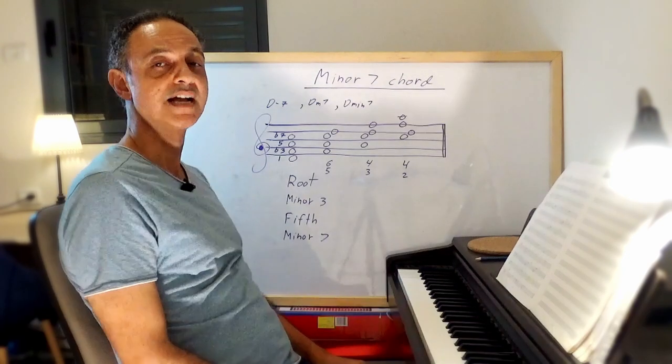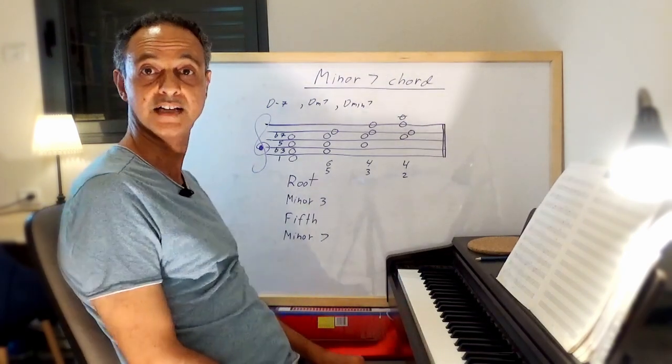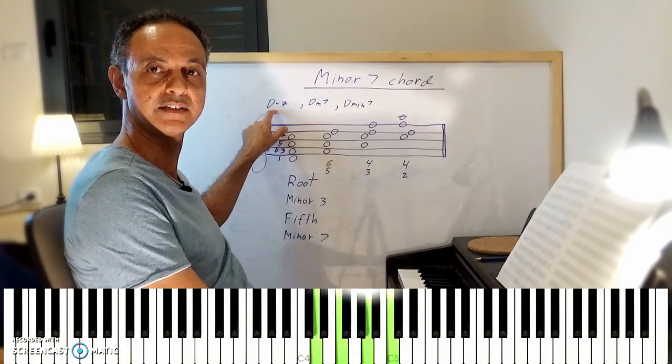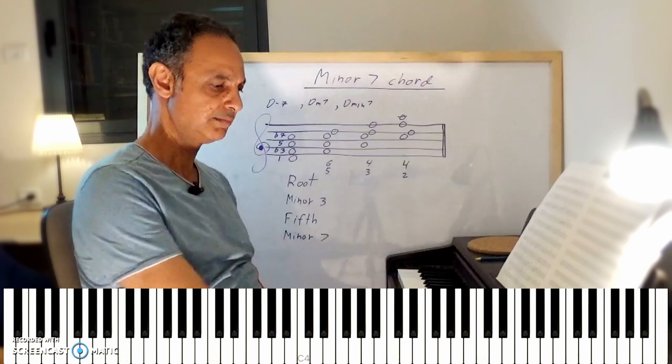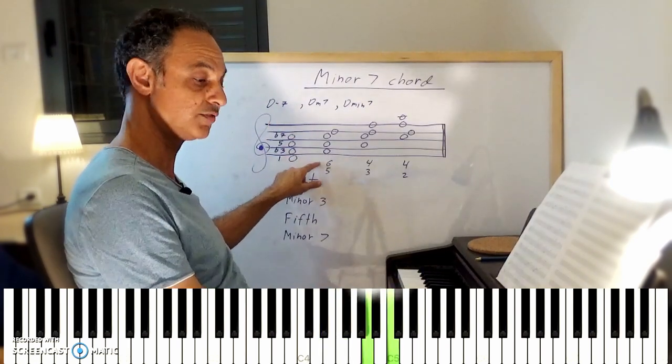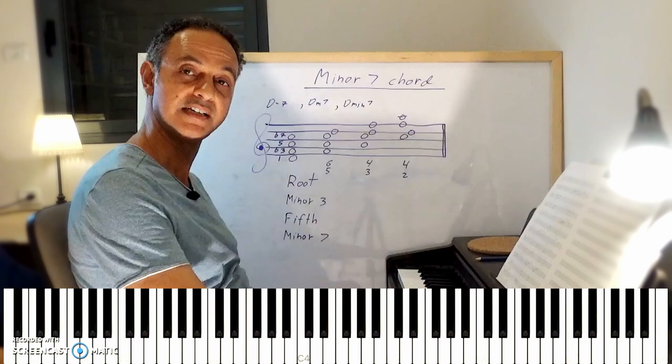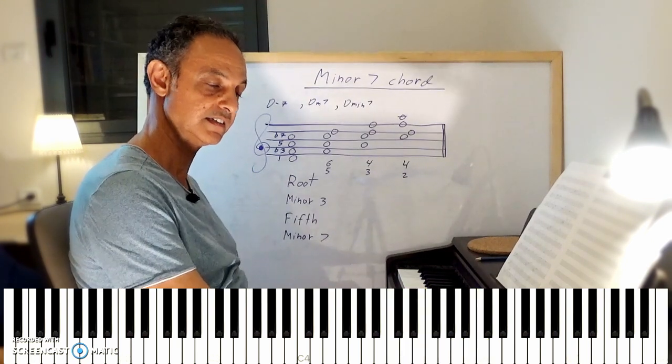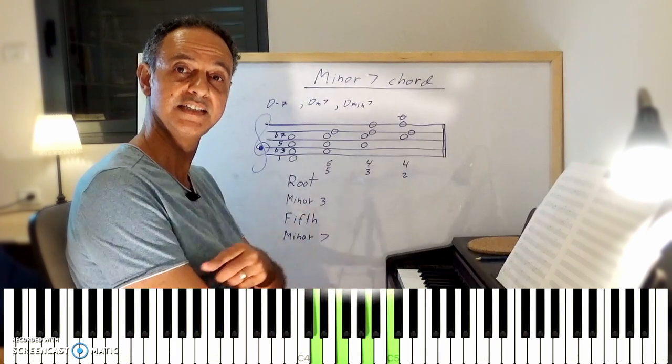Sometimes it's nice also to play some exercises. For example, let's go back to D minor seventh. With your right hand, play the root position, go to first inversion, second, third, then root position up, and then descending. Ascending and descending.